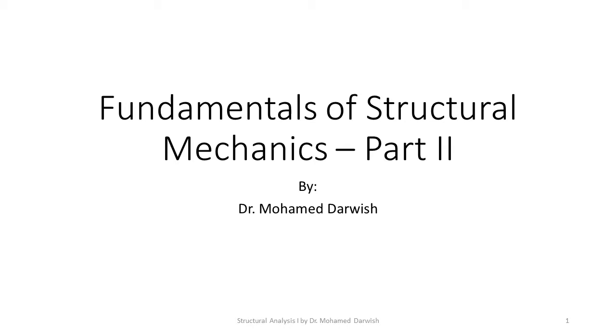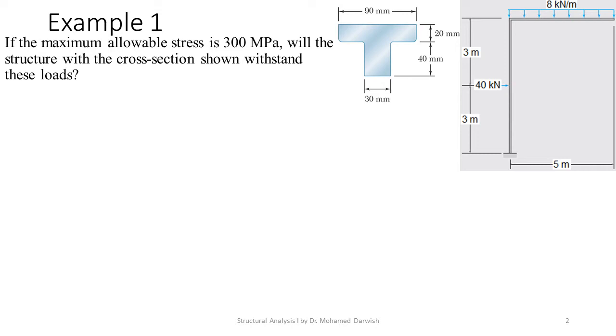Assalamu alaikum warahmatullahi wabarakatuh. This is the second presentation on fundamentals of structural mechanics. We'll solve a nice example. This frame with this loading has a T-shaped cross-section as shown, and the maximum allowable stress is 300 MPa. Will the structure with this cross-section withstand these loads?